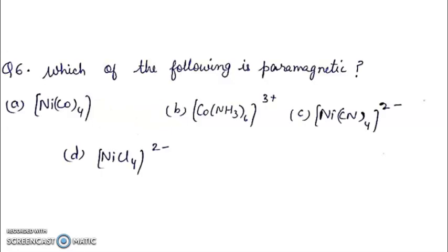Question 6. Which of the following is paramagnetic? Four compounds are given. We have to find the paramagnetic compound.